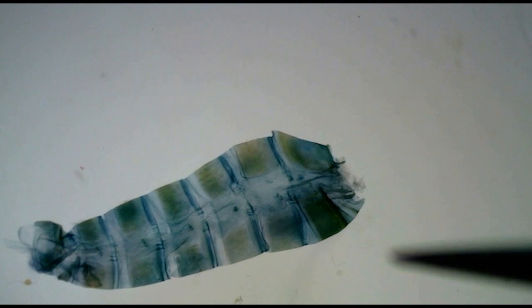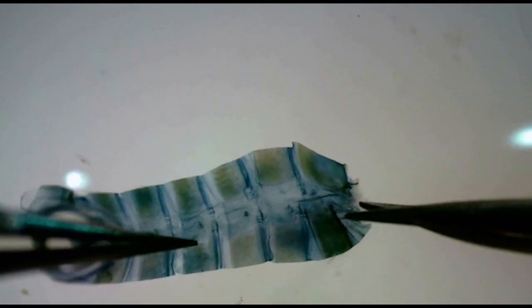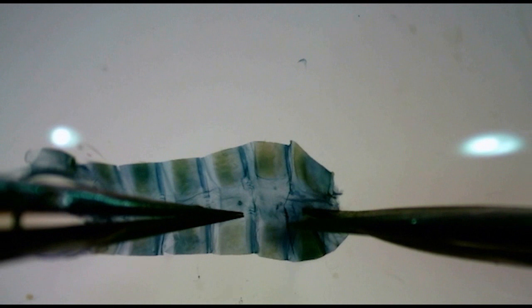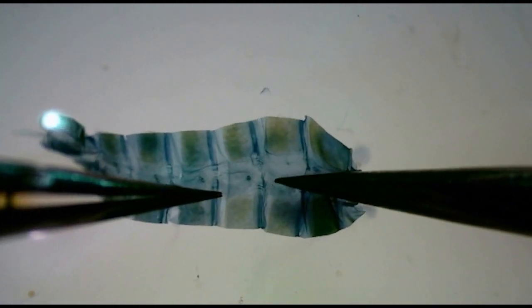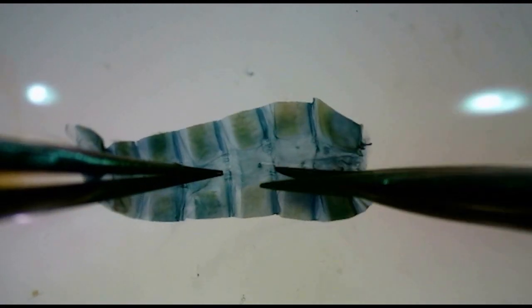Another optional step is cutting the abdomen to make a pelt. Using a fine pair of Vanna scissors, I cut lengthwise between the sternites and tergites to open up the abdomen.